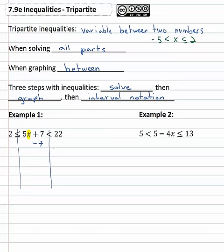So just like before, we're going to subtract seven to start getting the x alone. Now we just have to do it to all three parts, left, right and center to stay balanced. This gives us negative five is less than or equal to five x, which is less than fifteen. Now we can get the x alone by dividing by five and again we must do it to all three parts.